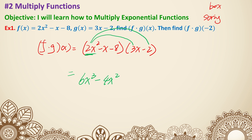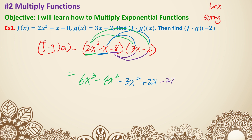Then the second term, which is negative x, needs to multiply with 3x and negative 2 as well. So negative x times 3x is negative 3x squared, and negative x times negative 2 is plus 2x. Lastly, negative 8 needs to multiply with 3x and negative 2, giving us negative 24x and positive 16.